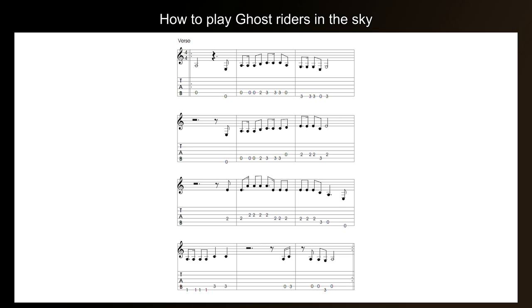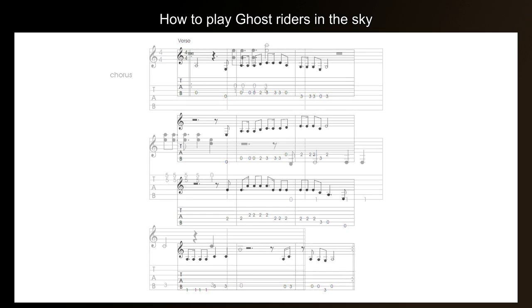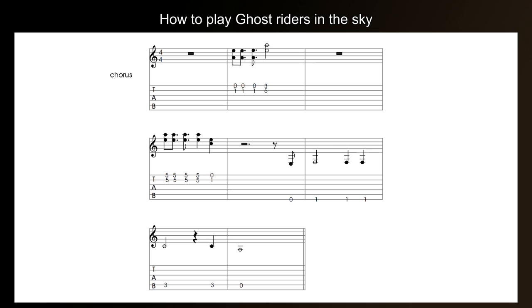Let's look at the last section — the chorus. You'll be pleased to know that as far as speed and rhythm are concerned, the chorus is the easiest part by far. However, it introduces a new technique: playing two notes at the same time, called a double stop. Let's go straight into the first line, where we only have to play one bar of music and all the notes are double stops.